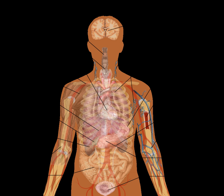The main tissue is that which is unique for the specific organ, such as the myocardium, the main tissue of the heart, while sporadic tissues include the nerves, blood vessels, and connective tissues.